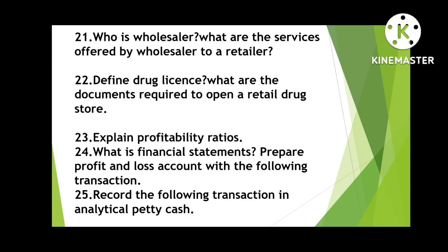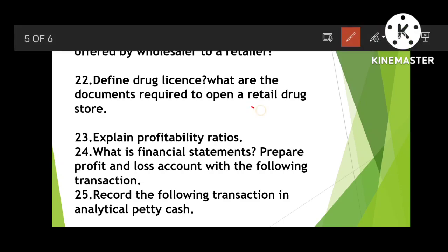The retailer shops buy from the wholesaler, and the wholesaler consumes the product from the manufacturer — this is a chain system. Then: Define drug license. What are the documents required to open a retail drug license? The main important document is the drug license itself — like a diploma in pharmacy license — then Aadhar card, PAN card, and other necessary things.